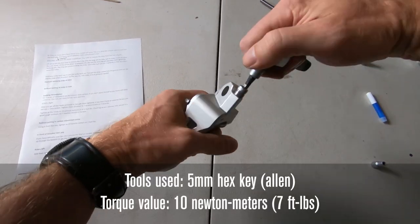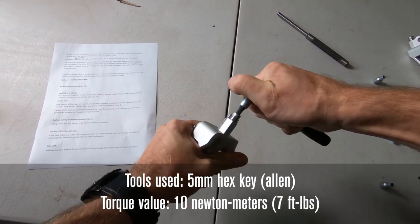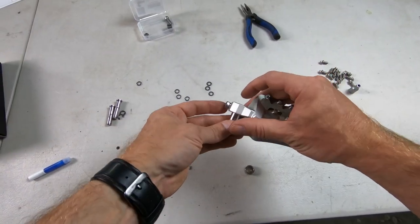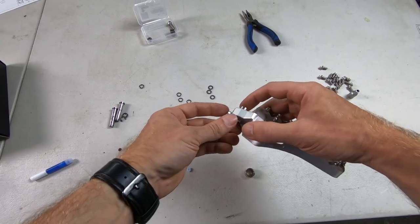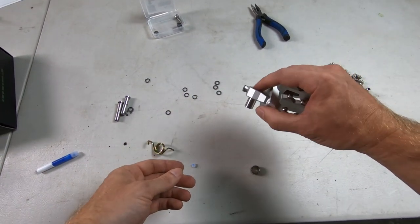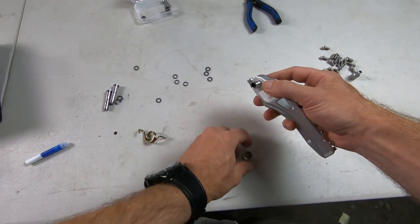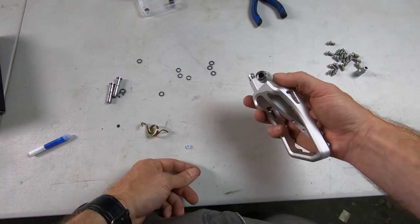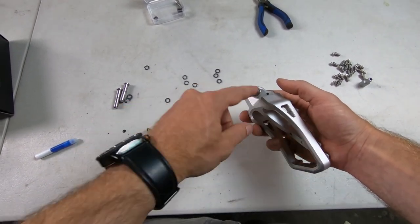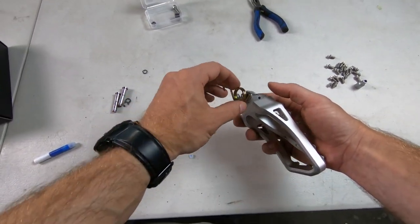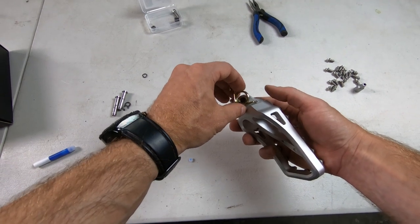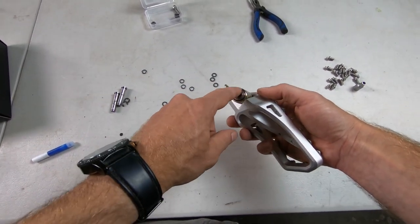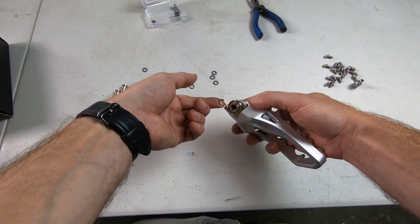Using a 5-millimeter hex key, tighten to 10 newton meters or 7 foot pounds. We've got that installed. Next, we'll want to grab our spring, 23-millimeter long bushing, and the 9-millimeter long spacer. So the way this goes, the long bushing goes through the foot peg body, then the shorter fatter spacer goes around there for the spring, and then the spring goes in this hole, hooks on there, and then rests around these two spacers and this will attach to the clevis.